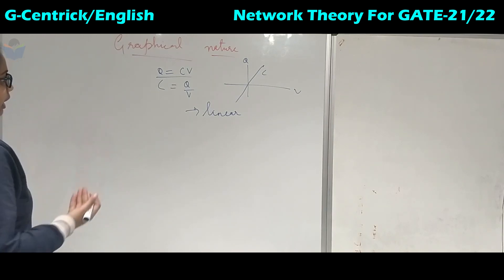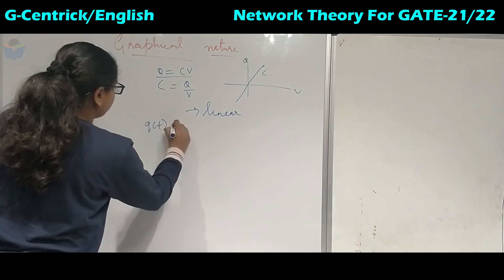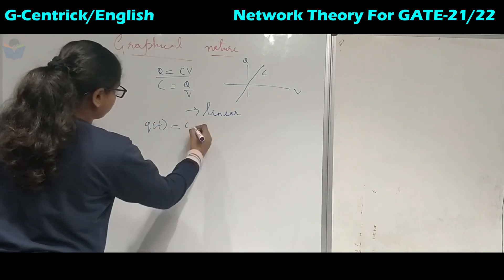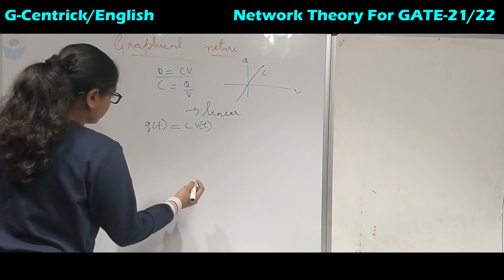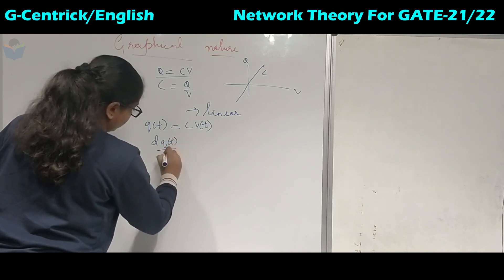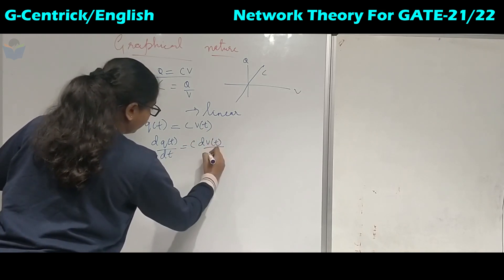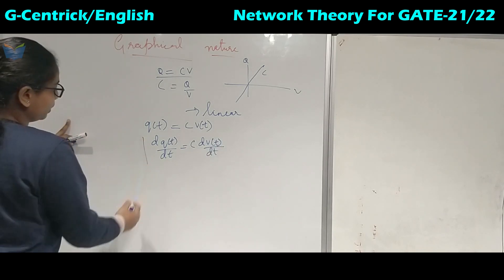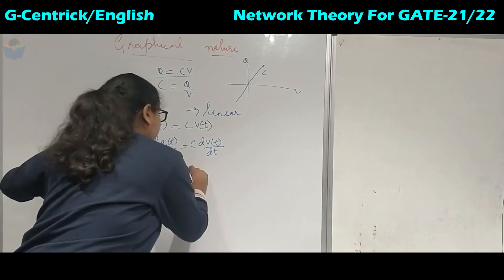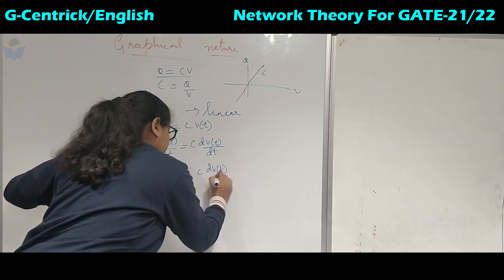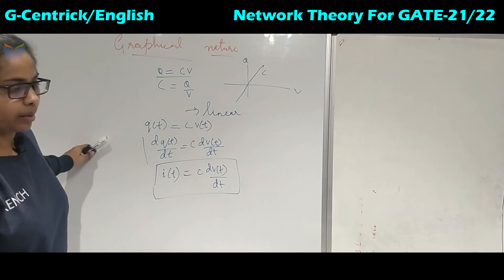If we write it in the form of time-varying quantities, Q(t) equals C times V(t). Differentiating both sides, dQ(t)/dt equals C times dV(t)/dt. Since dQ/dt is current i(t), this gives us i(t) equals C times dV(t)/dt — the equation for calculating current flowing through the capacitor.